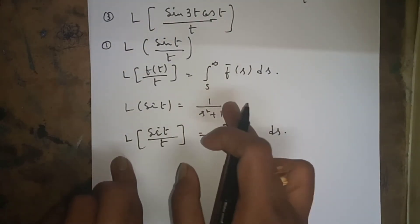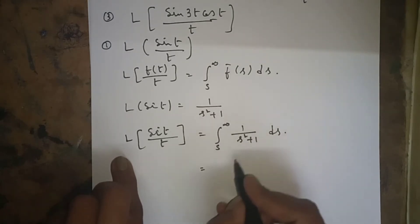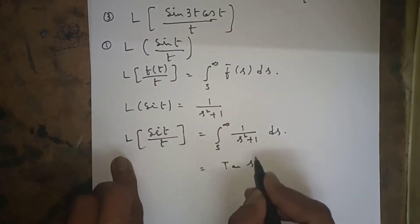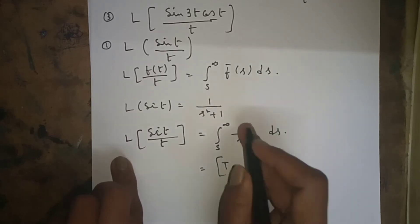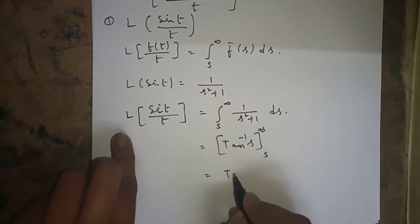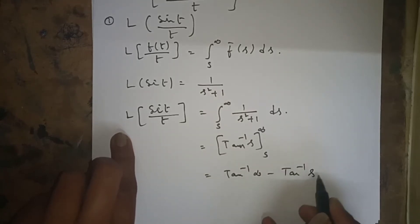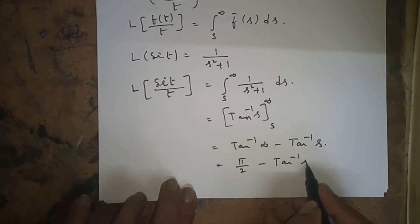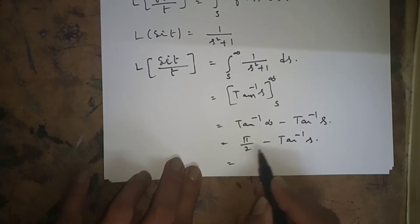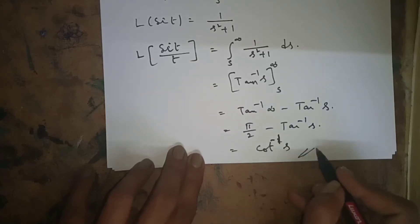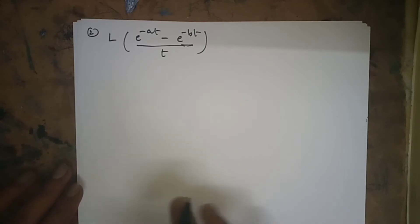F̄(s) = 1/(s² + 1). The integral of 1/(x² + 1) is tan⁻¹(x), so we get tan⁻¹(s) evaluated from s to ∞. Upper limit: tan⁻¹(∞) = π/2. Result: π/2 - tan⁻¹(s) = cot⁻¹(s). That is the answer.